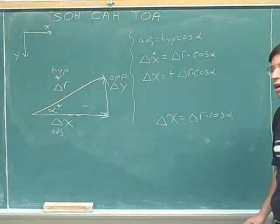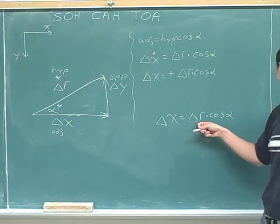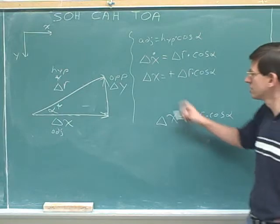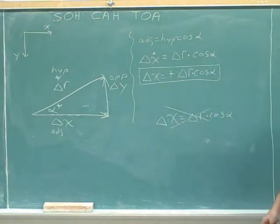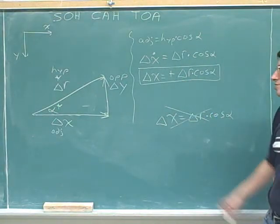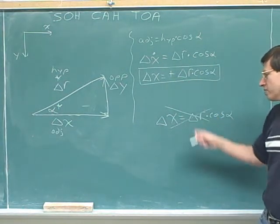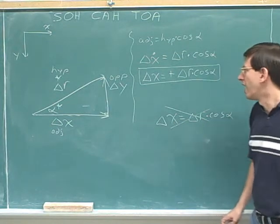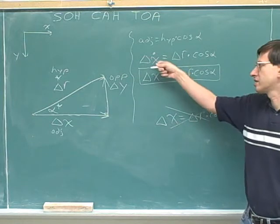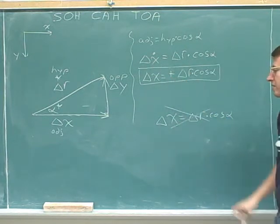When you did this problem on your own, if this was the answer you got, you blew it. This is not the right answer. This is the right answer. What's the difference? The difference is that the right answer indicates the sign. If you don't indicate the sign on the signed component, you're not giving the right answer. It's okay to leave the sign out here because this is just a magnitude. But you're not done until you have the signed component.